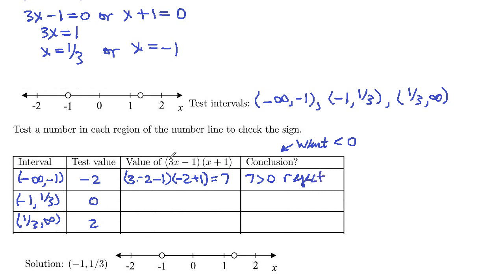Plug 0 in. 3 times 0 minus 1 would be negative 1. 0 plus 1 here is 1. Negative 1 times 1 is negative 1. Negative 1 is less than 0, so we're going to keep that interval.